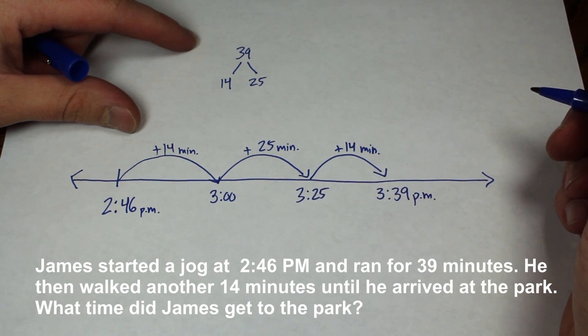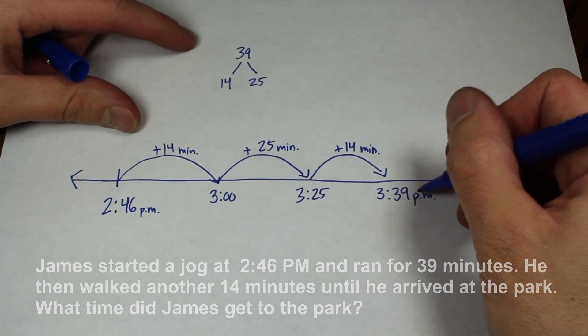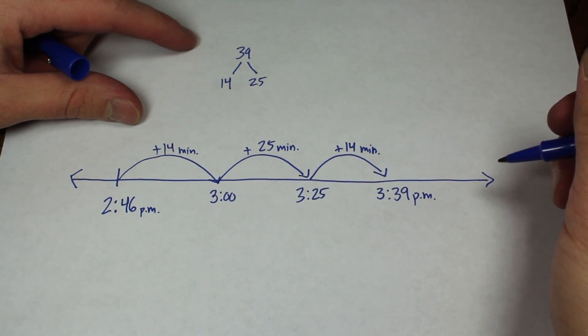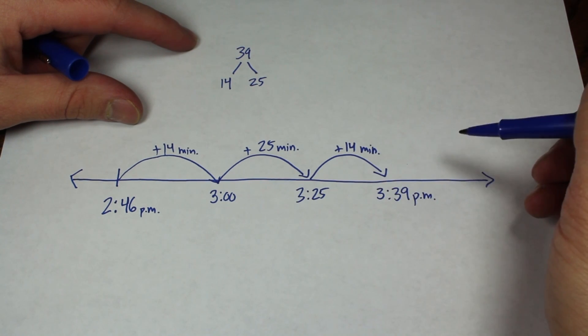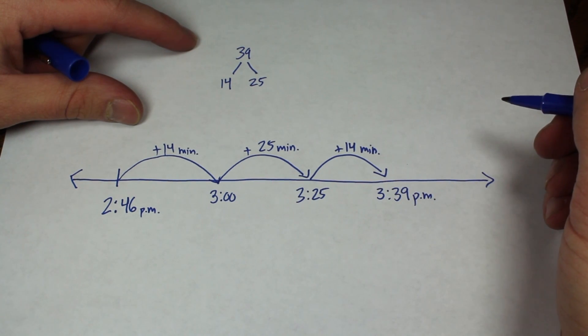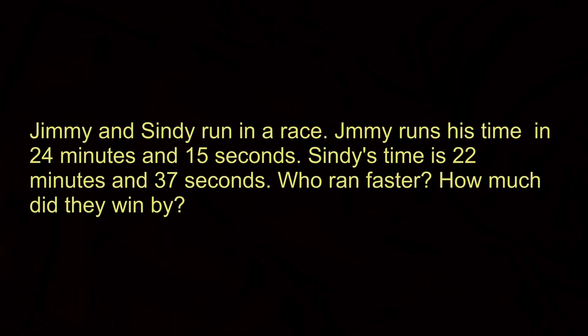So in the end, James arrives at the park at 3:39 PM. This is how you would use a number line to solve a problem dealing with time. So let's look at another problem that deals with time and use a number line to solve it.